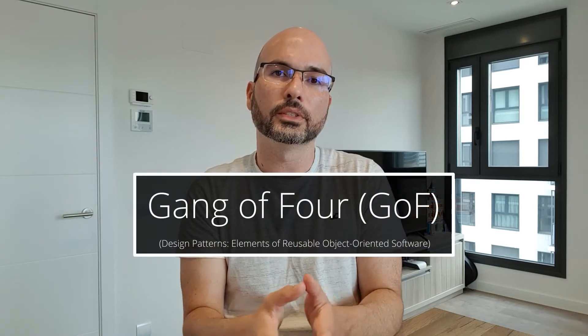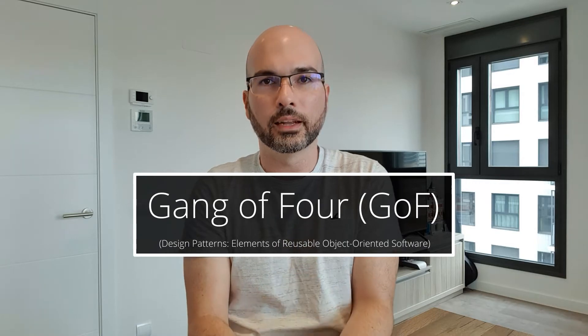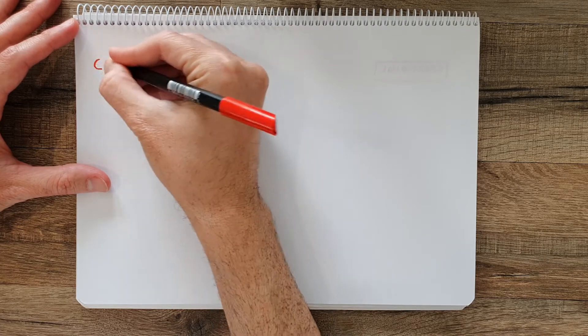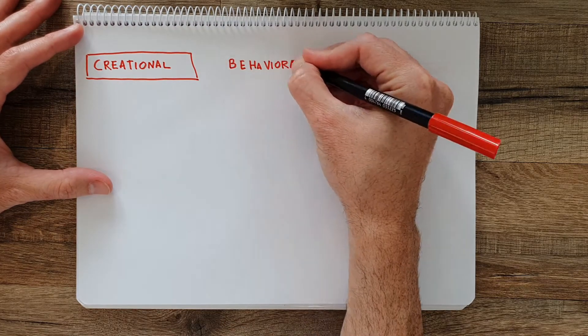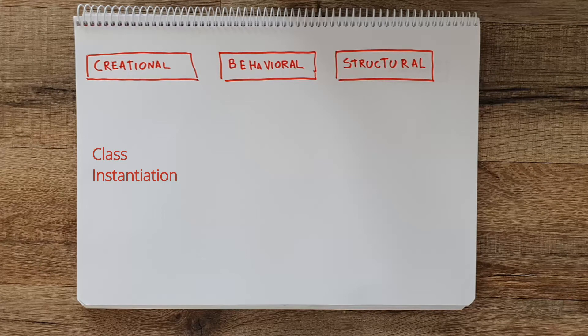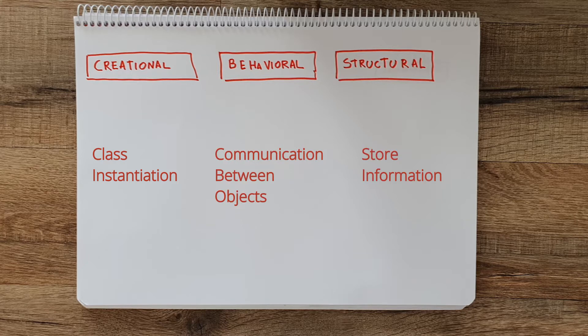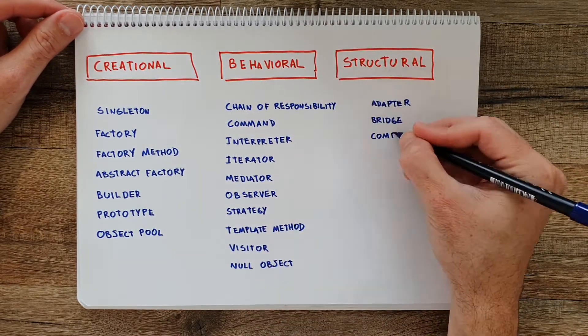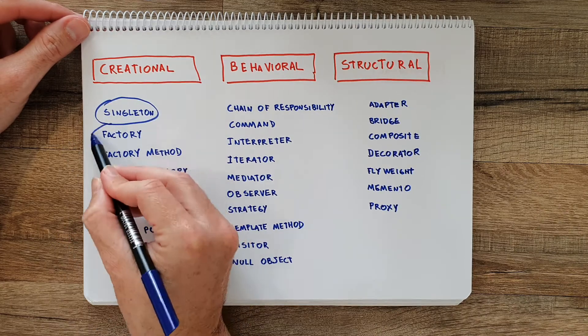When thinking about design patterns, it's inevitable to think about the Gang of Four, and specifically the book where they published the object-oriented design patterns in 1994. The Gang of Four split the design patterns into three types: Creational, Behavioral, and Structural. Structural focuses on how to store the information. In total, they originally introduced 23 patterns. You might have heard of some of them like Singleton or Factory.